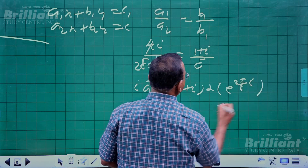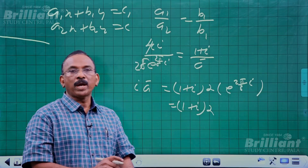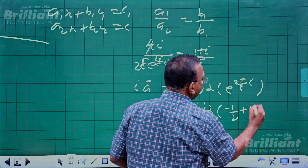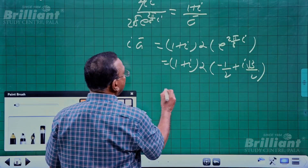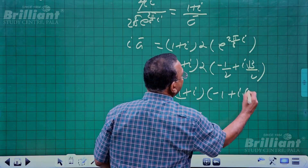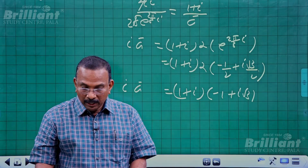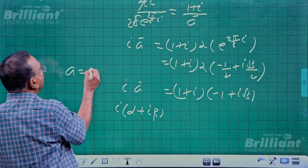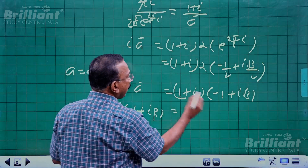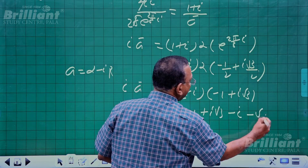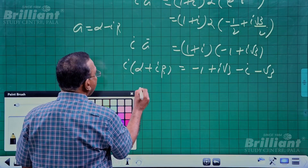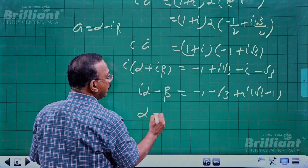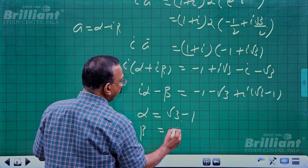Now e^(2πi/3) = cos(2π/3) + i·sin(2π/3) = -1/2 + i√3/2. So 2e^(2πi/3) = -1 + i√3. Expanding (1+i)(-1+i√3) = -1 + i√3 - i + i²√3 = -(1+√3) + i(√3-1). Since ā = α + iβ, we have i(α + iβ) = iα - β = -(1+√3) + i(√3-1). Equating: α = √3-1 and β = √3+1.